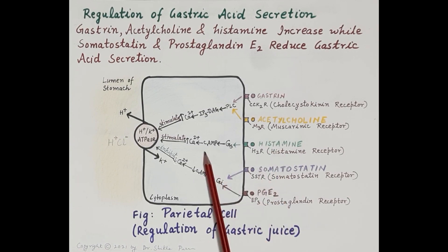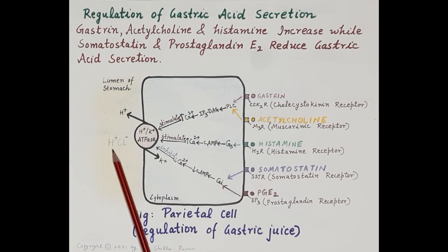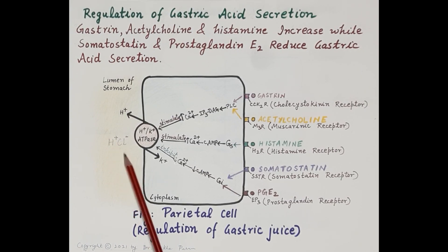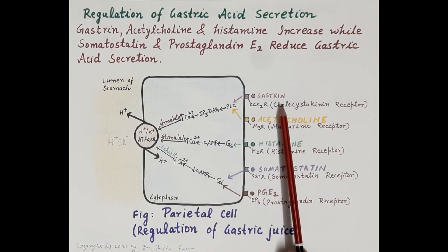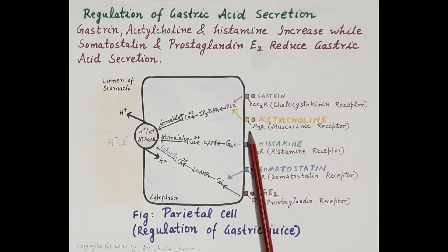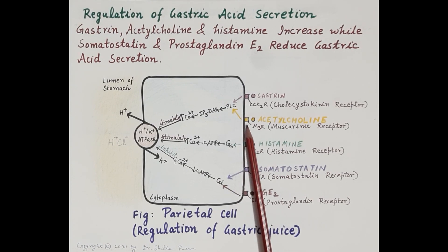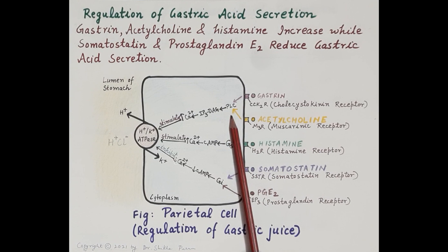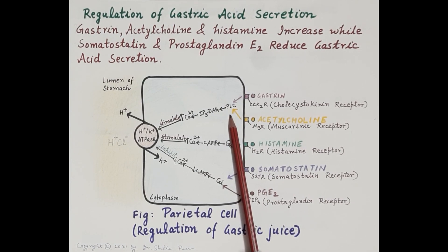Gastrin, acetylcholine, and histamine all three stimulate the parietal cells and thereby increase the release of hydrochloric acid. Gastrin binds to cholecystokinin receptors on the parietal cells, while acetylcholine binds to its muscarinic M3 receptors, shown here in yellow. After binding to their receptors, both gastrin and acetylcholine cause activation of the enzyme phospholipase C.